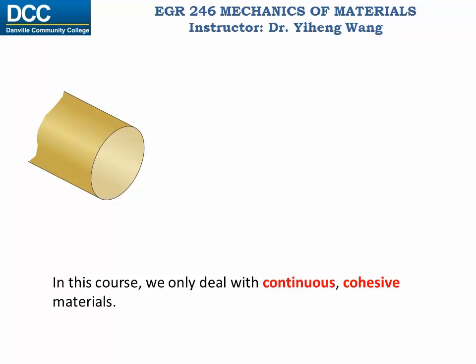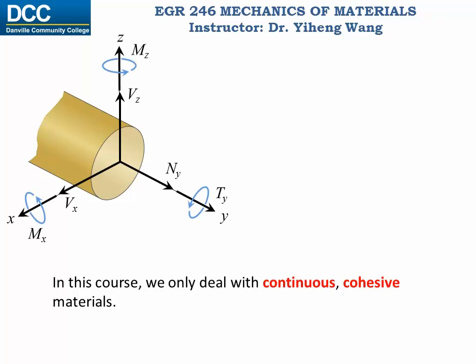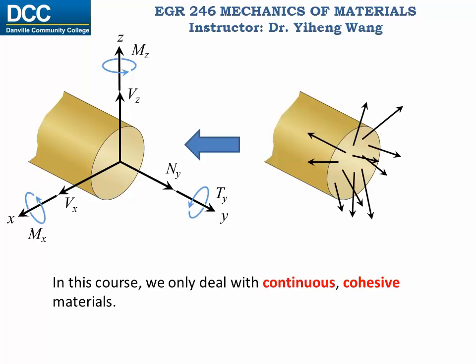From the statics course we learned that there can be a maximum of six independent internal reaction components — three internal forces and three couple moments. If you are not sure how to determine the internal reactions, you need to review statics. These six are in fact the resultant forces and resultant couple moments summarized about the x, y, and z axes. The actual internal forces are distributed throughout this cross-section, and we will learn more about how they are distributed later in this course.